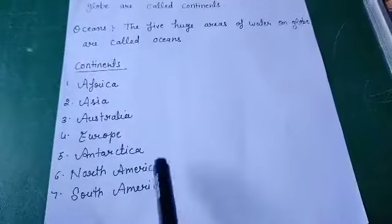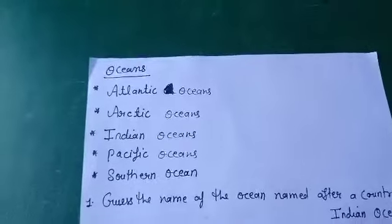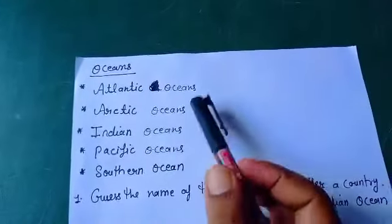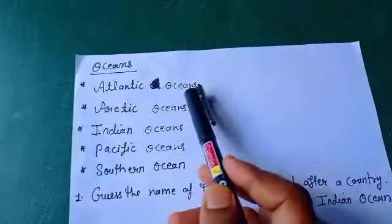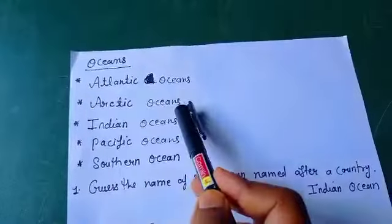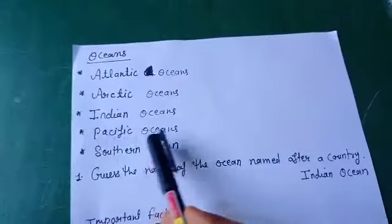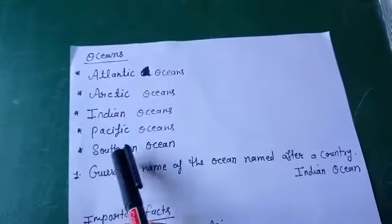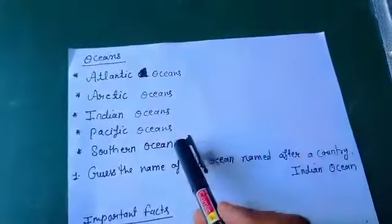Now we will learn about the oceans. So children, here I have written the names of our five oceans — they are five in number. First is Atlantic Ocean. Second is Arctic Ocean. Third is Indian Ocean. Fourth is Pacific Ocean. And fifth is Southern Ocean. These are the five oceans.